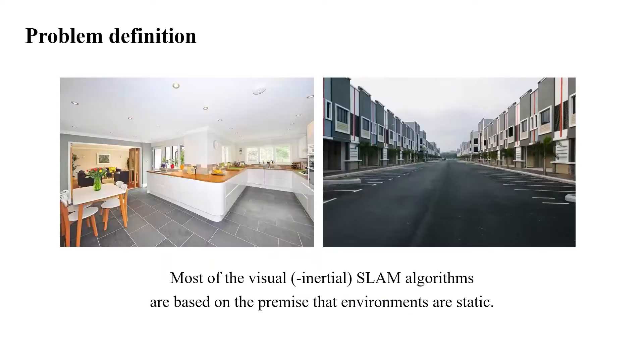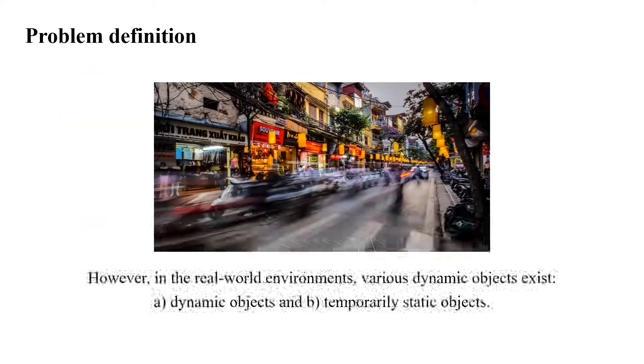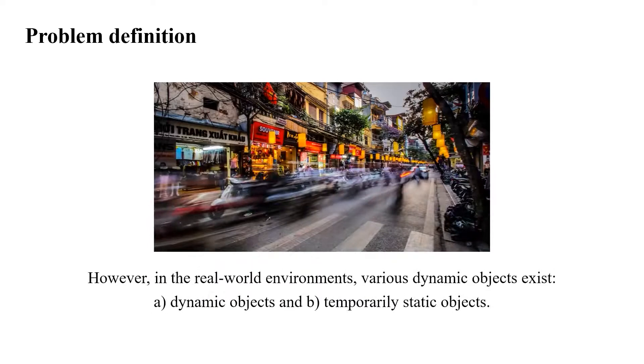Most of the visual SLAM algorithms are based on the premise that environments are static. However, in the real world environments, various dynamic objects exist. In this paper, the objects of interest are categorized into two types: dynamic objects and temporarily static objects.